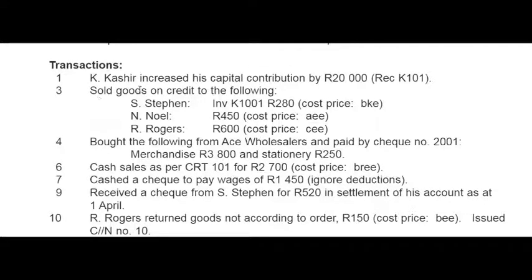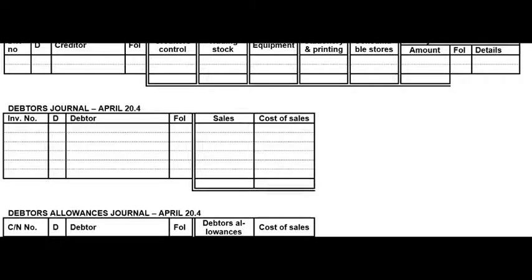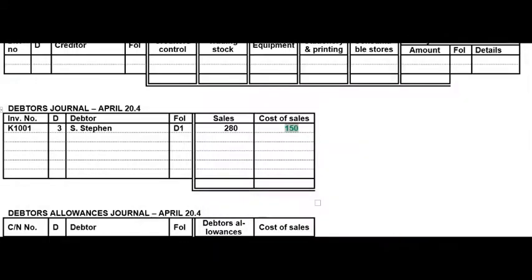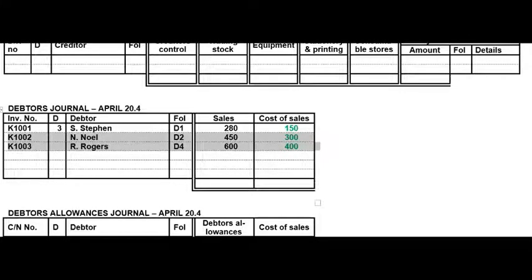On the 3rd we sold goods on credit — the words 'on credit' indicate it goes to the Debtors Journal. The transactions were to A. Steven (invoice K1001), N. Noel, and R. Rogers. For every single transaction they gave you a cost code and you had to use the Black Horse barcode principle. All of these go to the DJ, and you must remember to write the debtor's number.